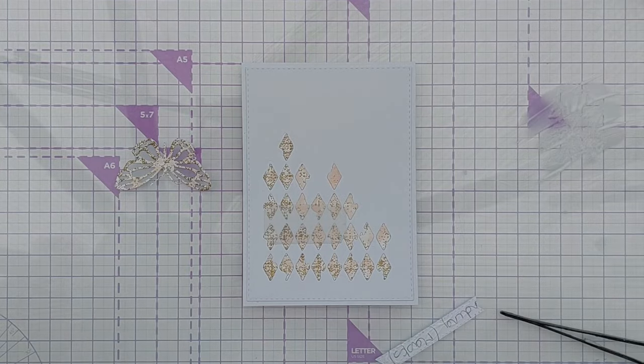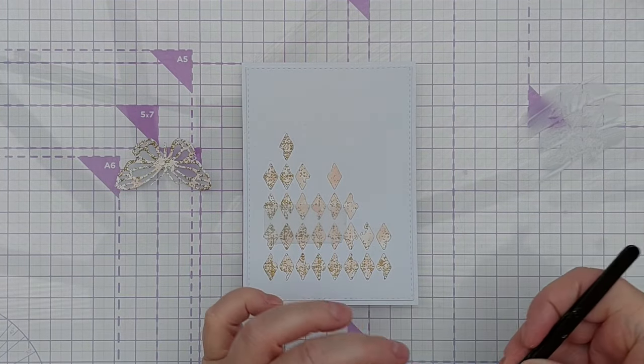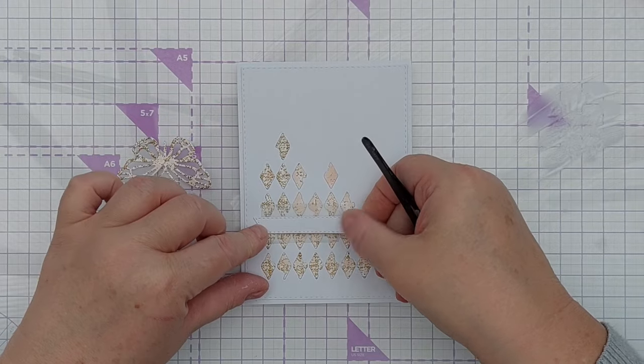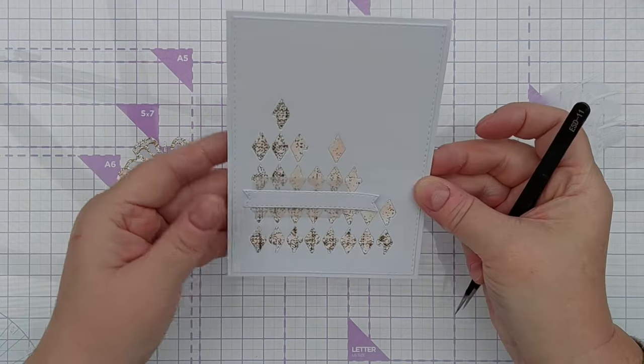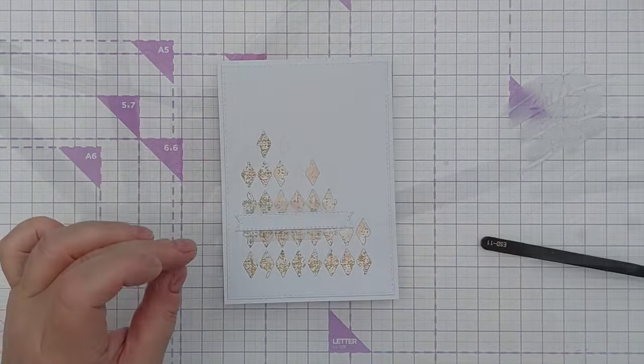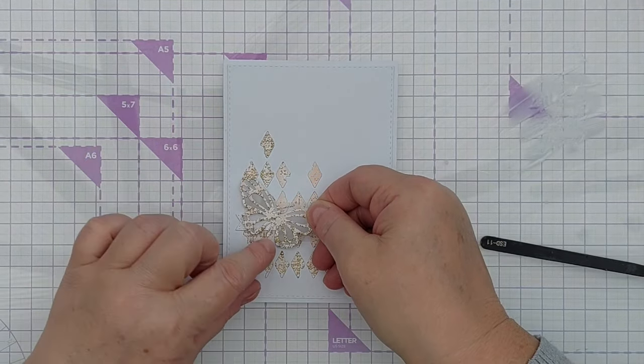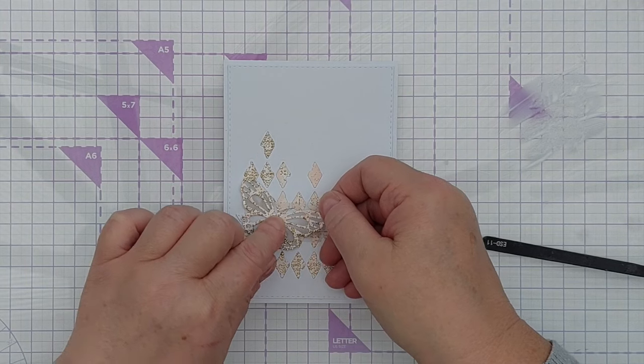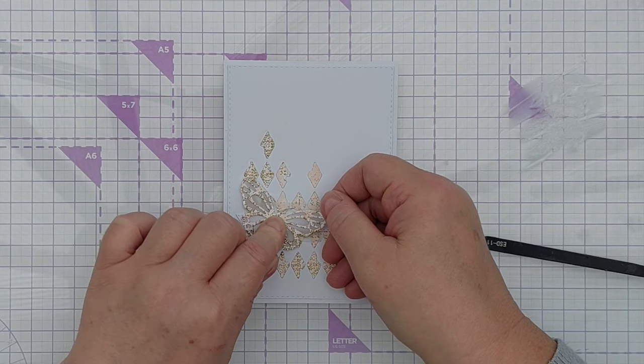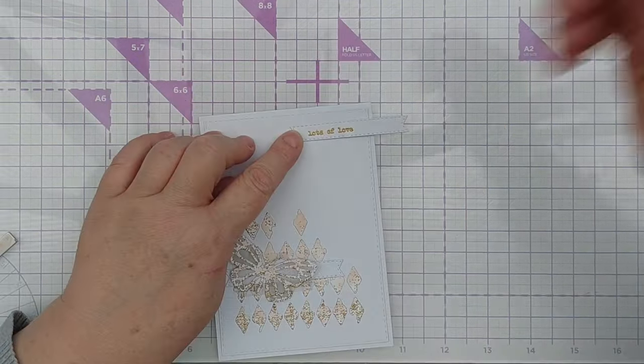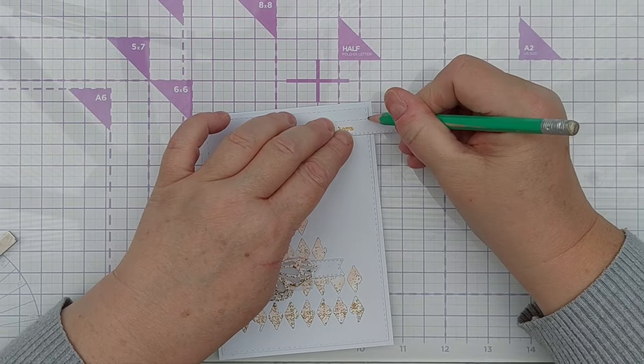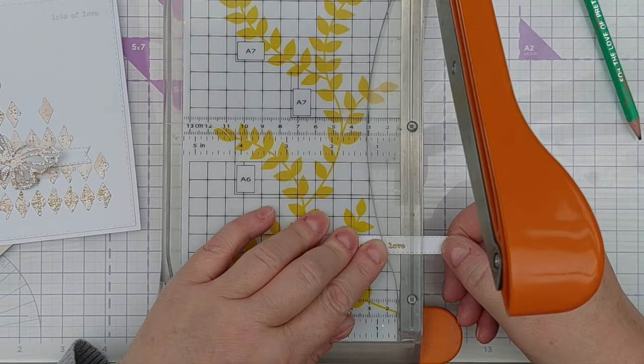I popped the banner down and then put the butterfly on top, all using tacky glue, and then I added a sentiment. I cut another fishtail banner and heat embossed the words 'lots of love' using a typewriter font stamp that I have and heat embossed that in gold because we've got lots of gold already. I put that in the top right hand corner so I've got a diagonal design going on.